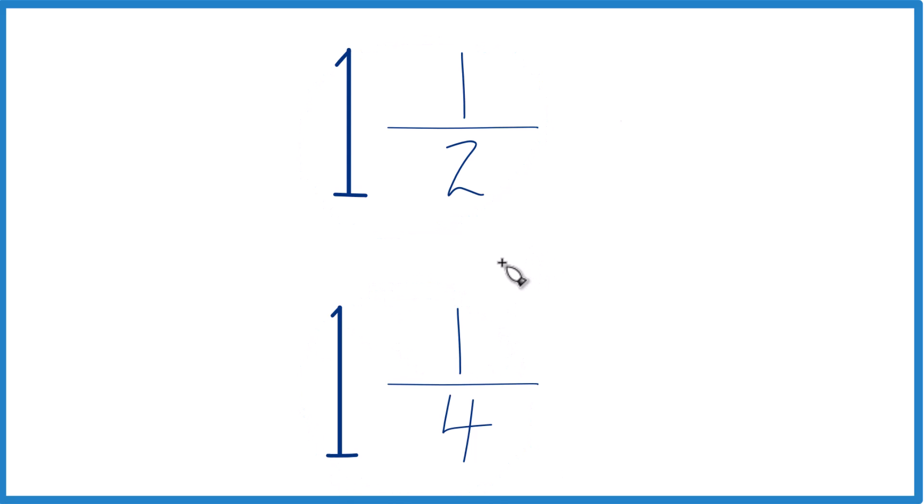So the way to figure this out, first off, since we have 1 here and 1 here, we can just ignore that. That's the same, so we're not going to worry about that.